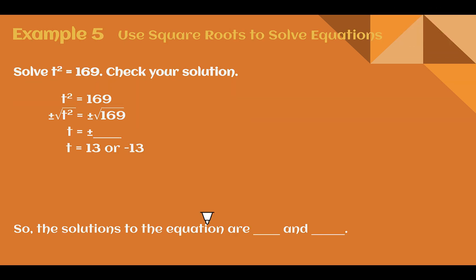Example 5, use square roots to solve equations. Solve t squared equals 169. We're going to take the square root of both sides to get t by itself. What number times itself equals 169? That must be 13. We put the plus or minus symbol: t could be positive 13 or negative 13. Our solutions are both positive 13 and negative 13.